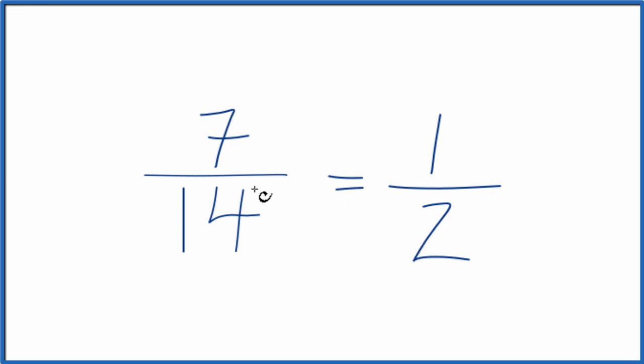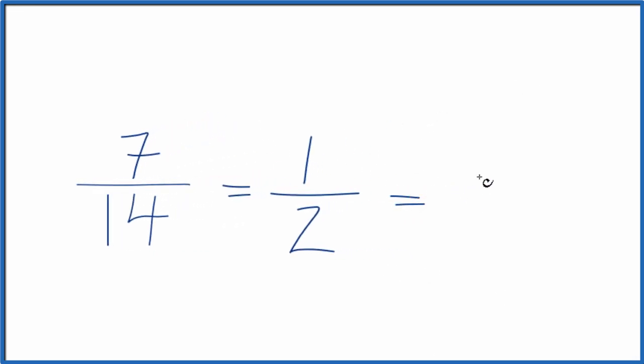If you divide 7 by 14 and 1 by 2, you get the decimal 0.5. And that's because these are equivalent fractions.